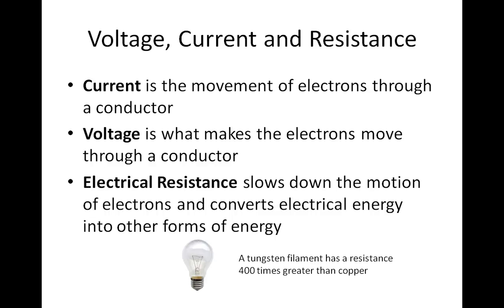An example is the tungsten filament found in incandescent light bulbs. The tungsten filament has a resistance 400 times greater than copper. As electrons pass through the filament, they are slowed down, and electrical energy is converted into light and heat.